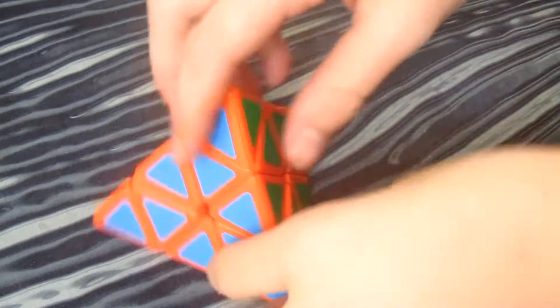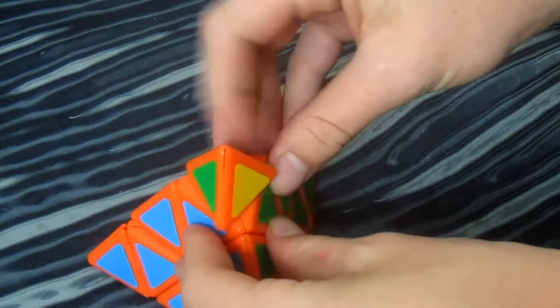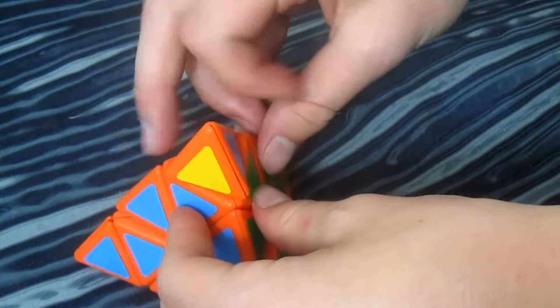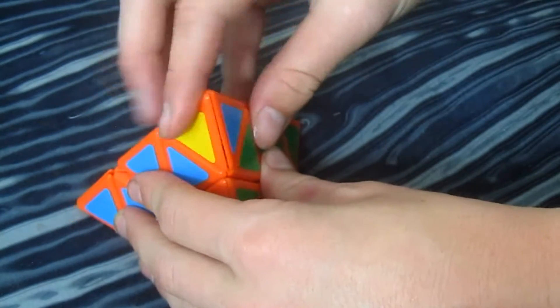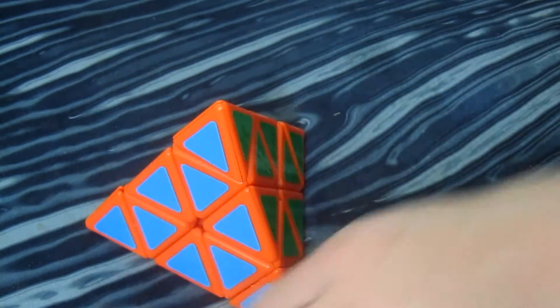Let's talk about the tips. Out of the box, the tips were very sluggish and a little bit locky, but after lubing with Traxxas 50K and lubing the whole puzzle, they turned extremely fast, even faster than my Moyu puzzle.